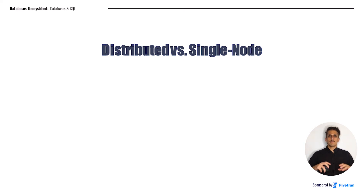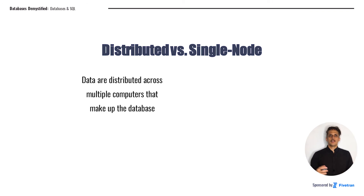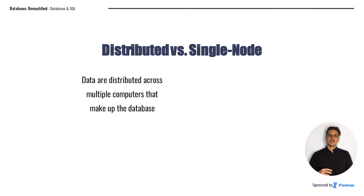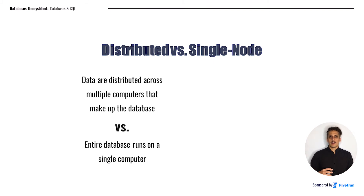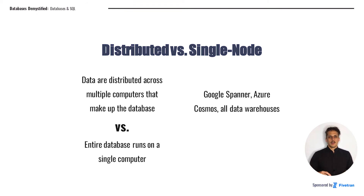Distributed databases are really important to understand because with today's technology, it's critical to understand distributed computing in general. In a distributed database, the data are distributed across multiple different computers or servers that make up the database. So you might have part of your database in a data center in New York, and another part in California, and then another part on the other side of the world. This is in contrast to a single node database, where all of the data are stored together on a computer or server. These are much easier to reason about, but less fault tolerant and less powerful computationally. On the distributed database side, we've got tools like Google Spanner and Azure Cosmos, plus all of the big data warehousing technologies. Whereas on the single node side, you've got your traditional databases, like PostgreSQL or MySQL.